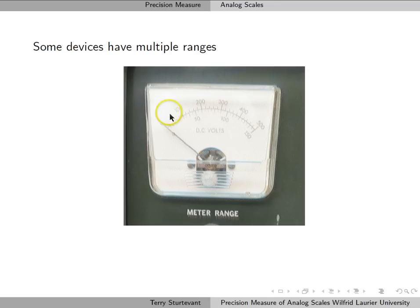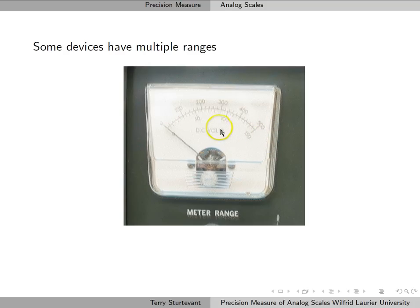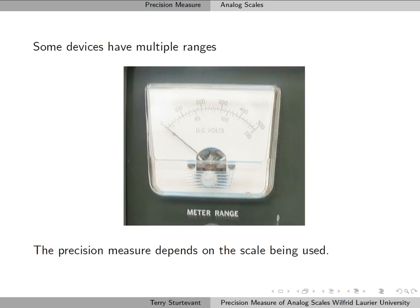There are some devices that have multiple scales on the same device. Here we have a voltmeter that has one range from 0 to 500 volts, and another range from 0 to 150 volts. In this case, the precision measure depends on which scale is being used, so the precision measure of the inner scale is not the same as the precision measure of the outer scale.